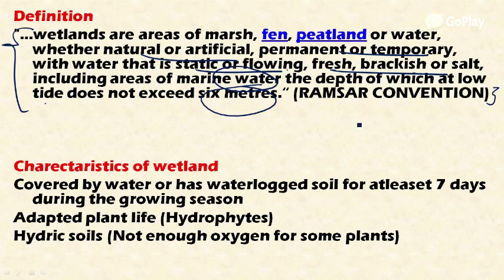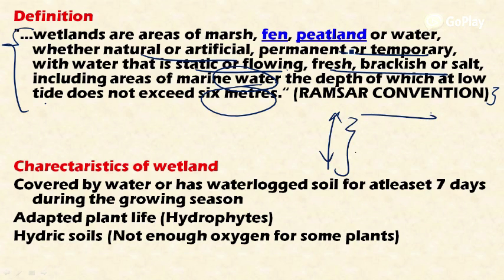The definition also includes areas of marine water, the depth of which at low tide does not exceed six meters. If the marine water depth exceeds six meters, it is not considered a wetland. This is the broadest definition, including both natural and artificial ecosystems, permanent or temporary, static or flowing, freshwater, brackish, or saltwater.